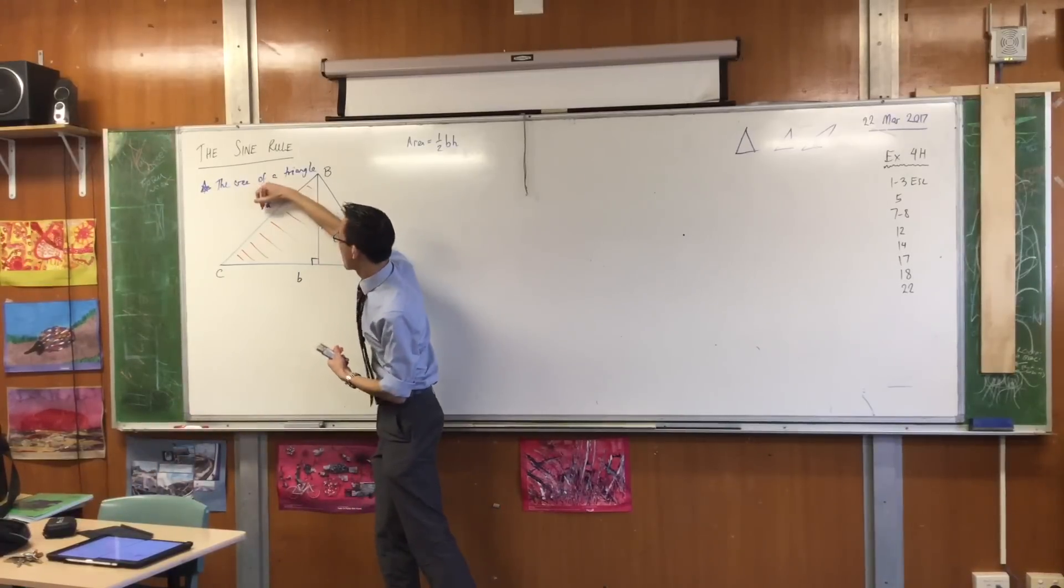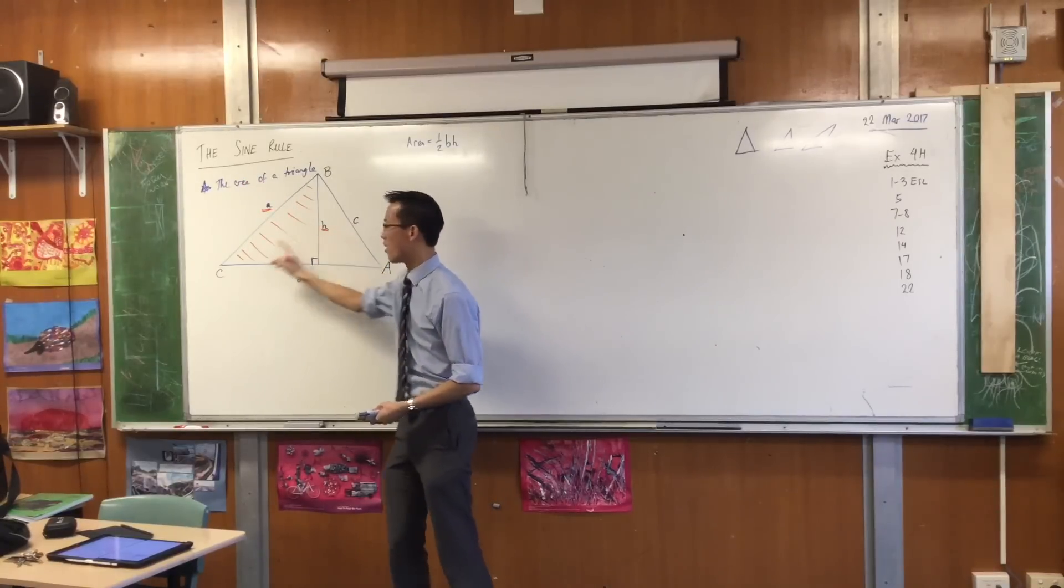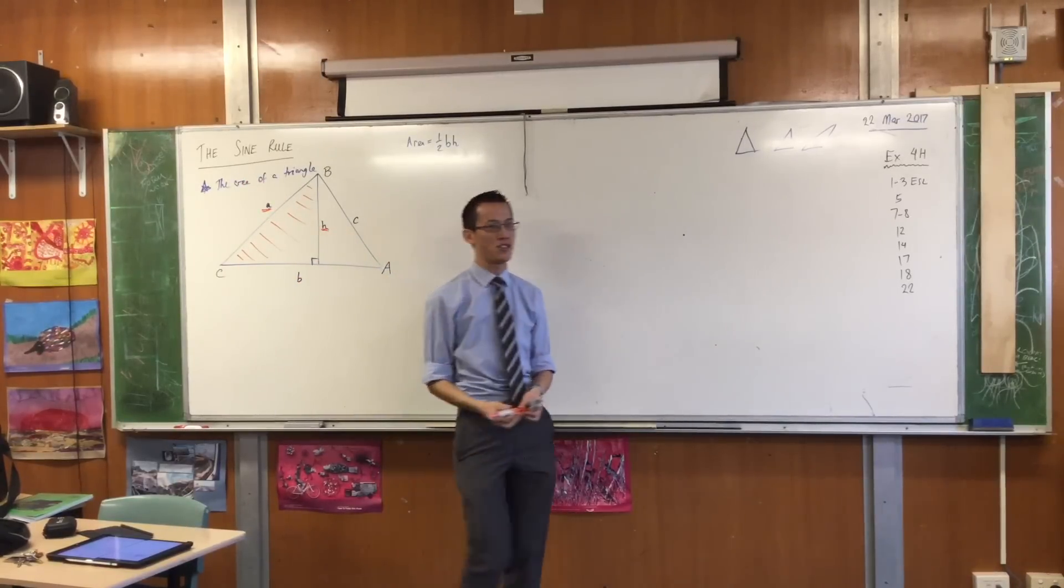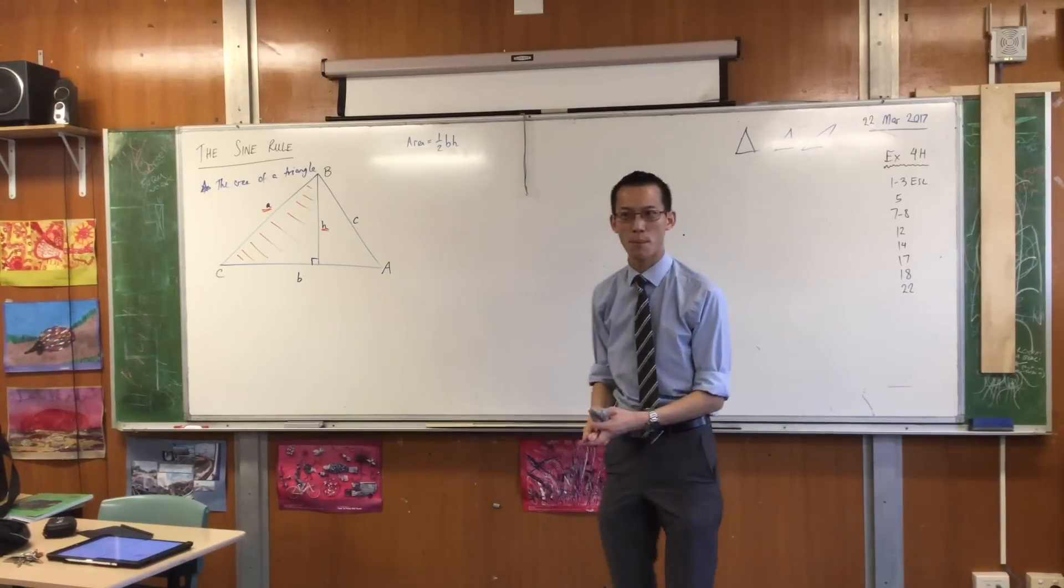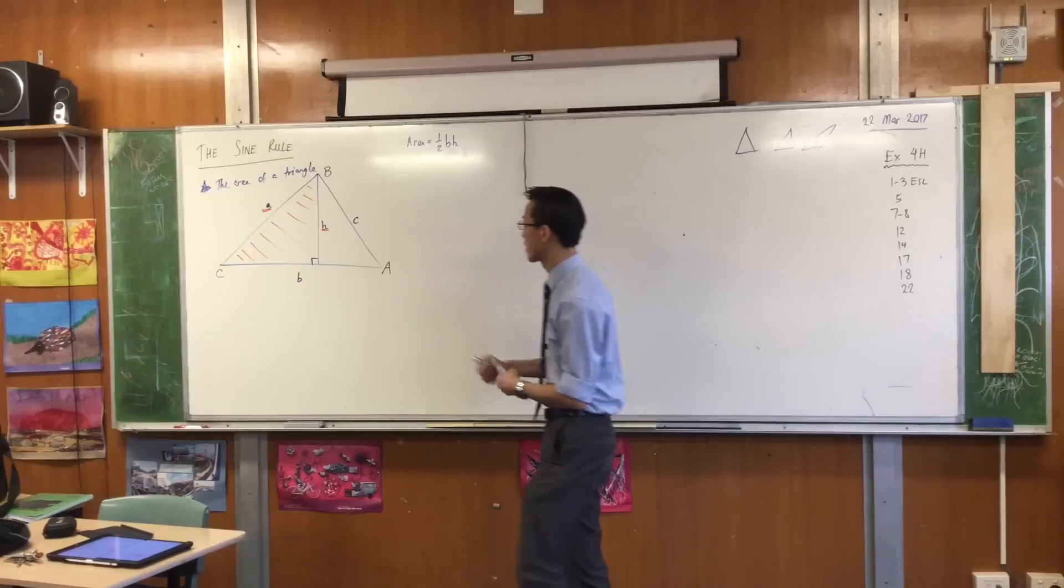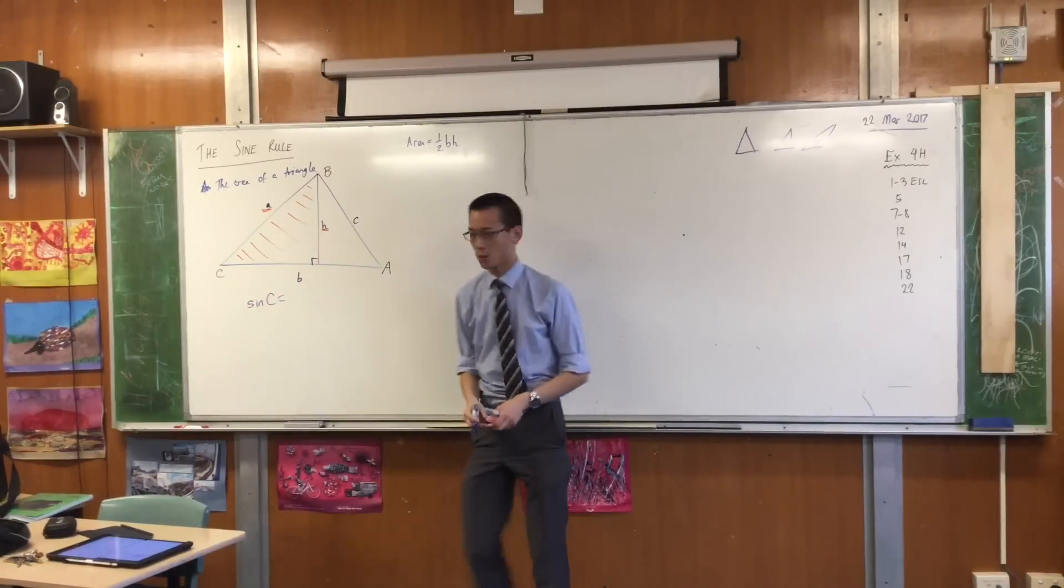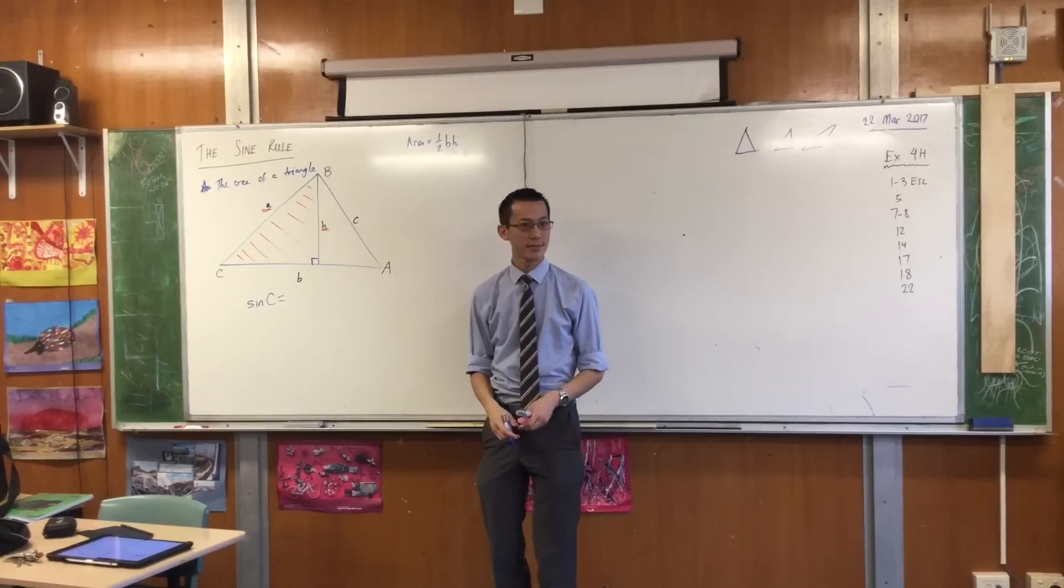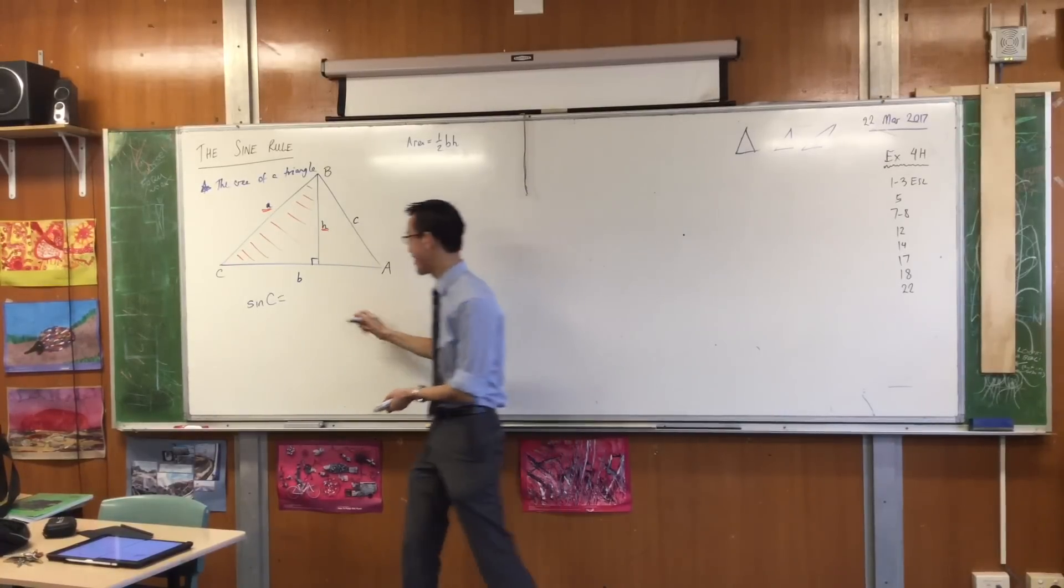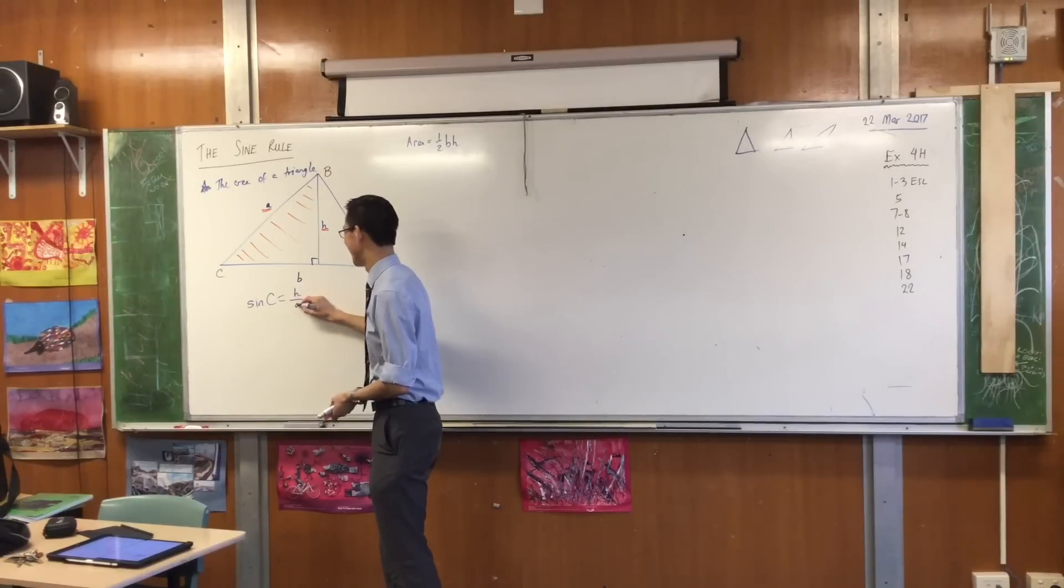So have a look. Keep track of me. In this right angle triangle, I've got the hypotenuse. I've got the side opposite this angle. So which ratio will I use? Sine is opposite over hypotenuse. So let's write this together. I can say sine C is equal to H over A.